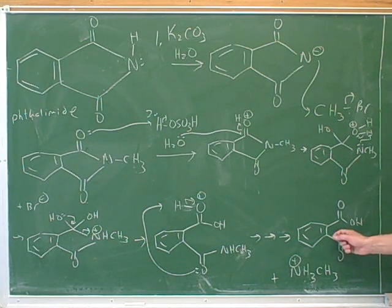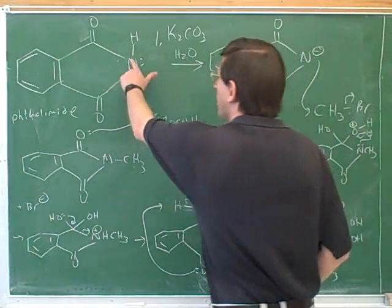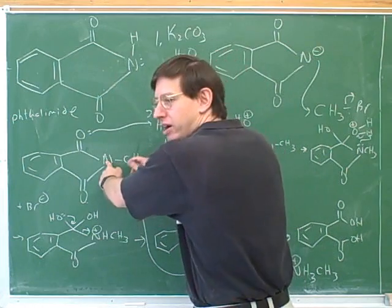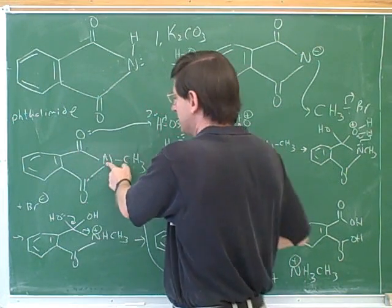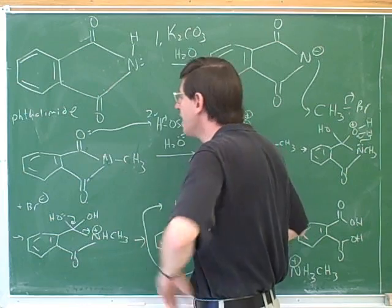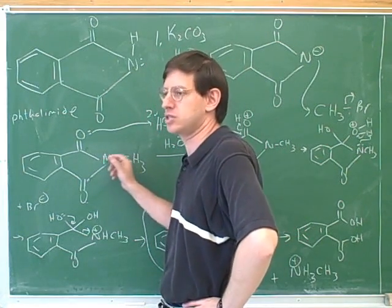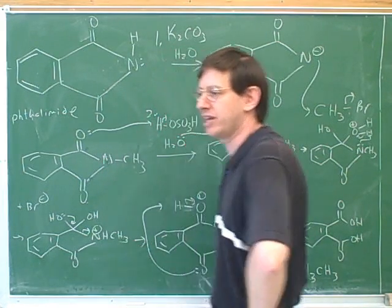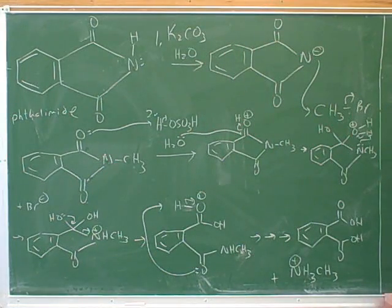We don't really care about this — this was just the machinery. So we've just broken off this machinery. This is the thing we were trying to get all along. All we really cared about was the nitrogen and the alkyl group we were putting on it. This was all just the machinery that we were using to deliver the nitrogen to the alkyl group, and to dampen down the nucleophilicity of the nitrogen so it wouldn't over-alkylate. We saw how resonance dampens down the nucleophilicity here. So these would be our products.